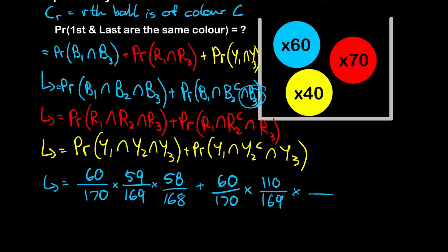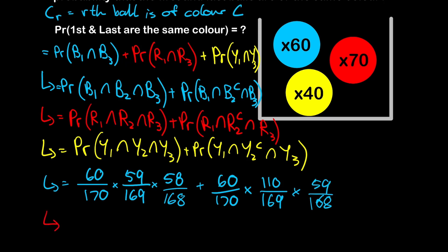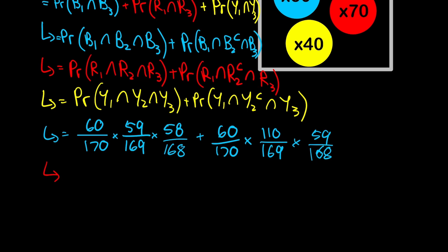For the third ball being blue: there are 168 balls left. If we drew a blue ball first and a non-blue ball second, we've only removed one blue ball, so there are still 59 blue balls out of 168 left. We apply the same logic to calculate the probabilities for the red and yellow balls.